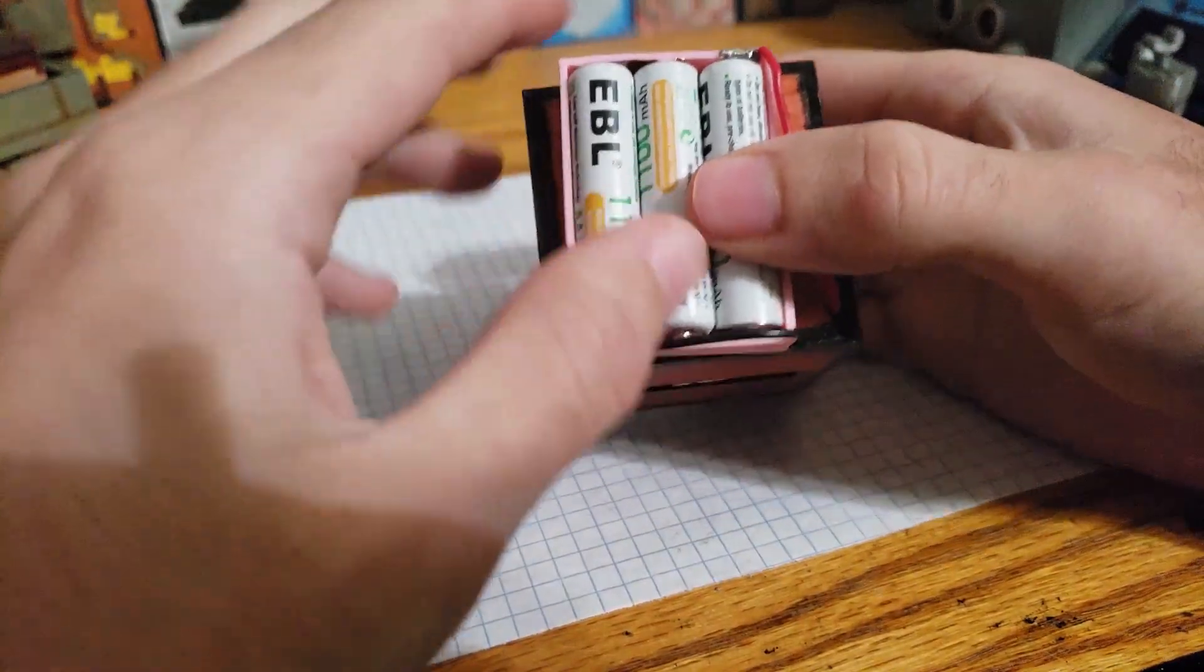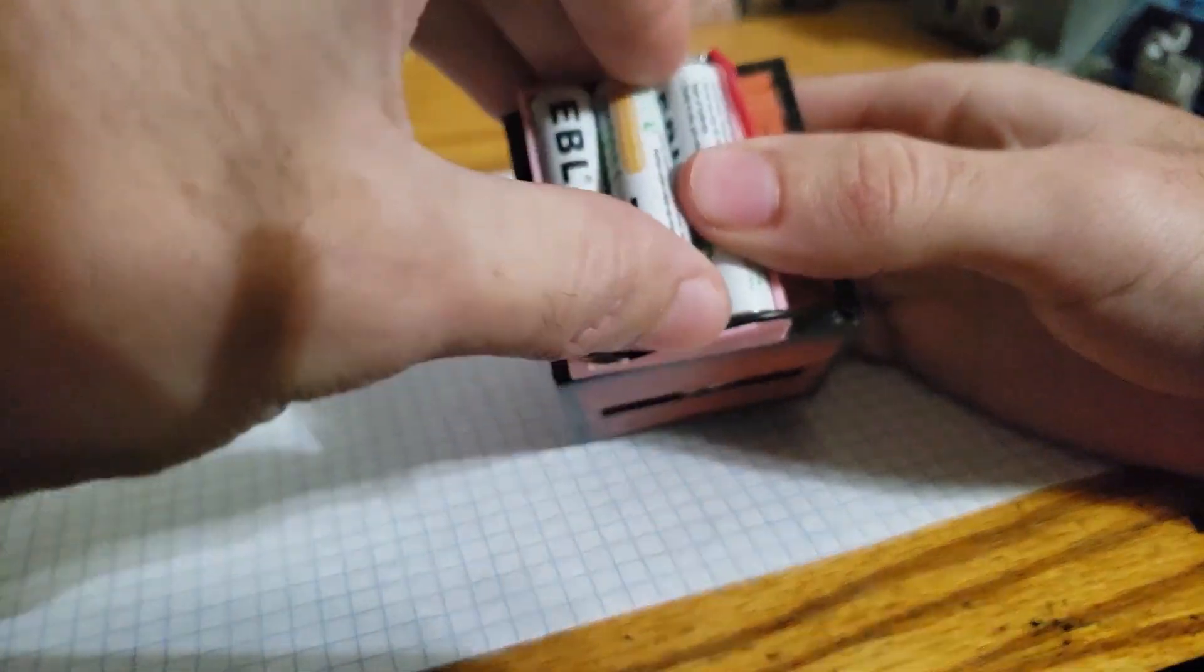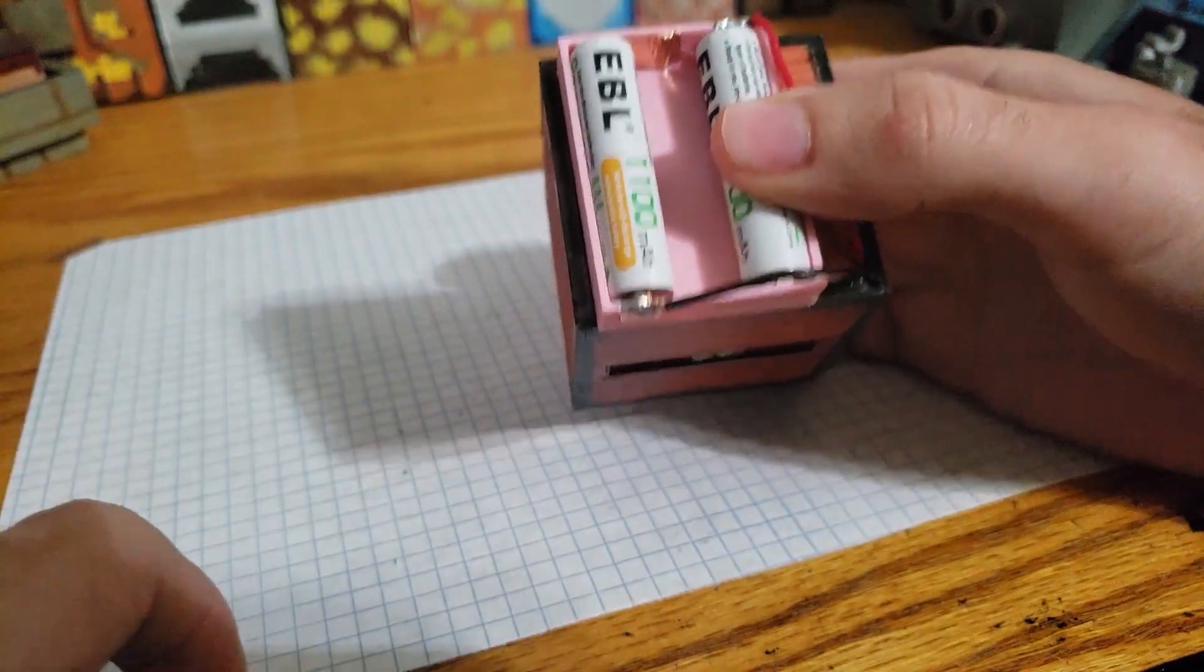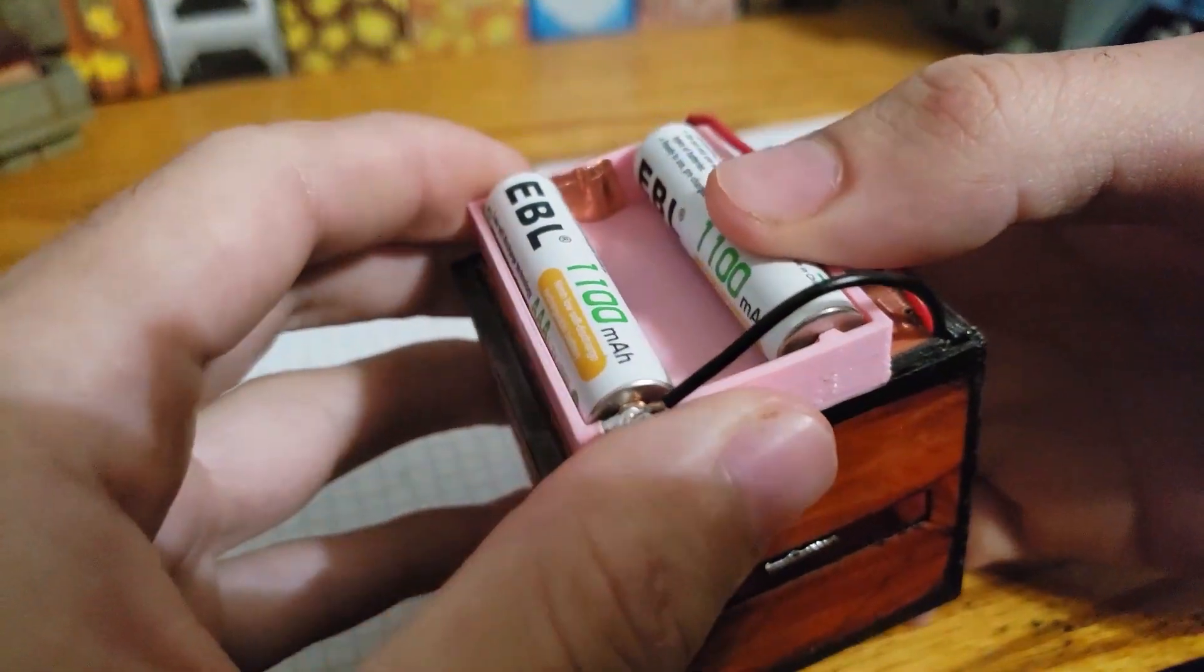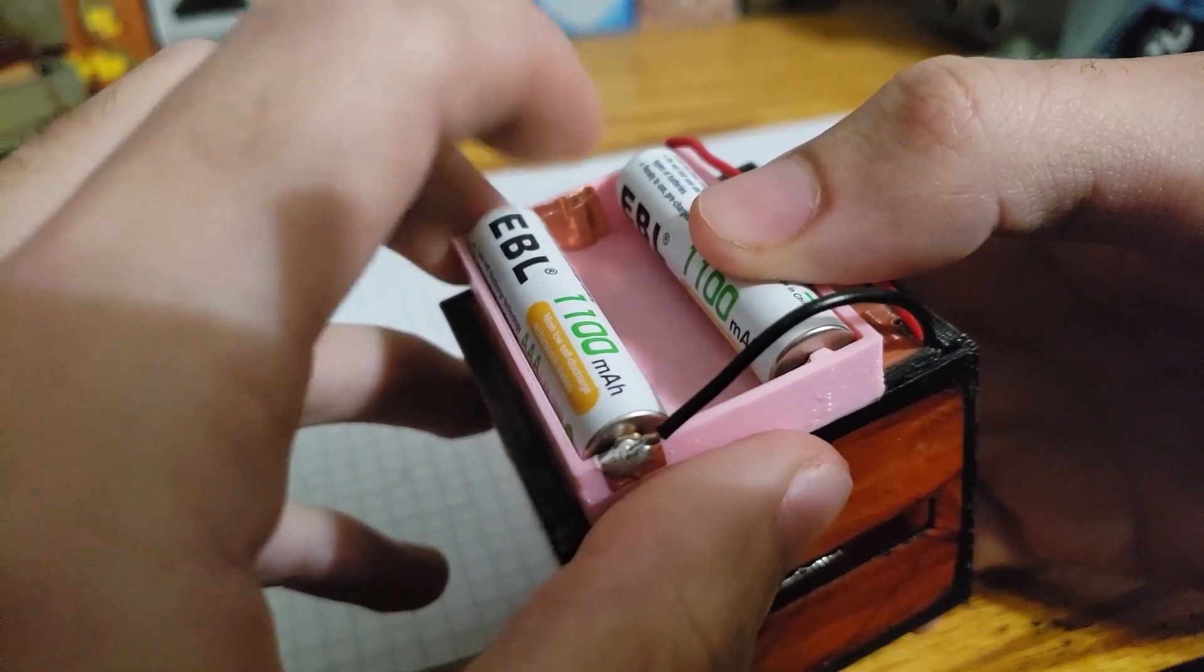So here's a battery pack. In order to turn it off, you just remove the middle. And in here, you can see that I'm using copper tape to make the contacts.